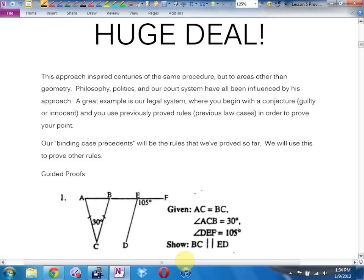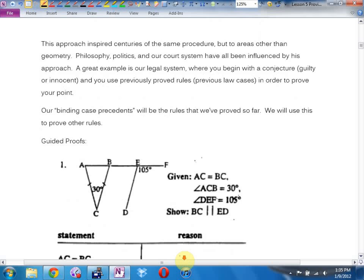This approach inspired centuries of the same procedure, but to areas other than geometry, philosophy, politics. Our court system is a classic example, where you enter items into evidence, postulates. You try and refer to previous cases, previous common notions. Our whole court system is based on that. Much of our political system is based on that. We call it debating. They're trying to go statement reason to defend or refute an argument. For us, our binding case precedents will be the rules that we've proved so far, the ones that are on the front part of your page, the yellow sheet, and some common notions, stuff that just seems obvious.